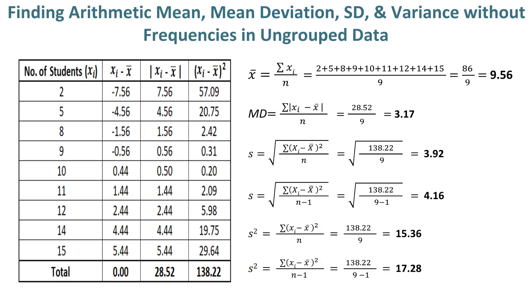Finding arithmetic mean, mean deviation, standard deviation and variance without frequencies in ungrouped data. It is an important tip: if frequencies are not given, then you will find the arithmetic mean instead of the mean. We will add the first column values from 2 to 15, which sum to 86, and there are 9 values. So you will divide 86 by 9 to get an arithmetic mean value of 9.56.